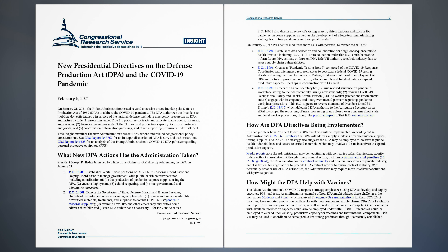On January 26, the President issued three more EOs with potential relevance to the DPA. EO 13,994 establishes data collection and collaboration for high-consequence public health threats, including COVID-19. Data collection under this EO could be used to inform future DPA actions, or draw on DPA Title VII authority to solicit industry data to assess supply chain vulnerabilities. EO 13,996 creates a pandemic testing board composed of the COVID-19 response coordinator and interagency representatives to coordinate federal COVID-19 testing efforts and intergovernmental outreach. Testing shortages could lead to employment of DPA authorities to prioritize production, allocate inputs and finish tests, or expand productive capacity, perhaps in coordination with EO 14,001.